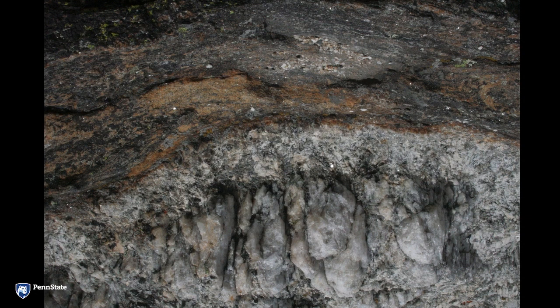Just next to the metamorphic rock you can see the contact where the metamorphic rock meets the granite. The metamorphic rock was probably hot when the granite was squeezed in, but the granite was hotter, so the granite cooled faster and got smaller crystals right next to the metamorphic rock. You can see this chilled margin of the granite where it was squirted in.